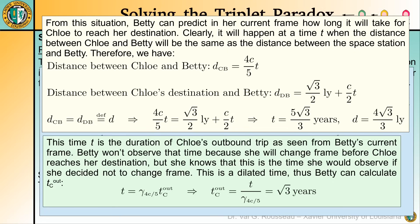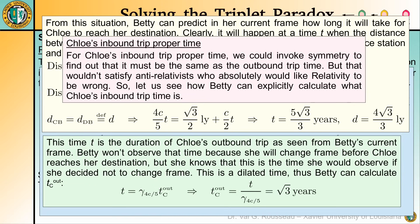The events corresponding to Betty and Chloe arriving at their destinations, which were simultaneous in Alice's frame, are not simultaneous in Betty's frame — in Betty's frame, she arrives first, while in Chloe's frame it is the opposite. But let us keep in mind that this time t is the time of Chloe's outbound trip that Betty would observe if she decided not to change direction. She knows this is a dilated time, so she can predict Chloe's outbound trip proper time, which results in a value of √3 years — exactly the same as her own proper time. Let us also explicitly calculate Chloe's inbound proper time to prove once again that there is no paradox.